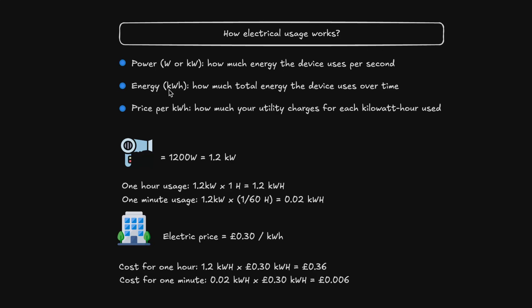Energy is defined by kilowatt per hour — it's the energy used per hour, representing how much energy the device uses over a specific period of time, in this case one hour. Then we've got the price per kilowatt hour, which is how much your utility company charges for each kilowatt hour used. One hour of hairdryer usage equals 1.2 kW × 1 hour = 1.2 kWh. For one minute, you take 1.2 kW multiplied by 1/60, because one minute is one-sixtieth of an hour, giving us 0.02 kilowatt hours.